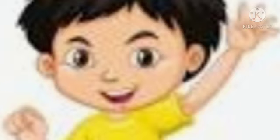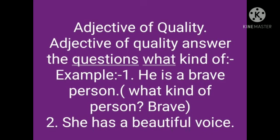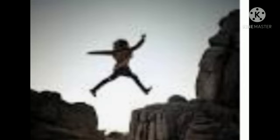Let's learn kinds of adjectives one by one. Adjective of quality. Adjectives of quality answer the question 'what kind of.' For example: He is a brave person. If you ask the question 'what kind of person is he?' the answer is brave. So brave is an adjective of quality here.